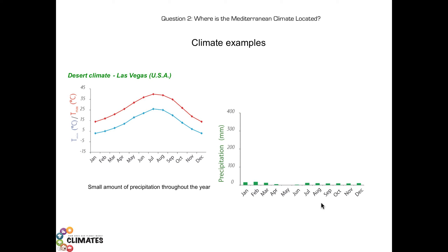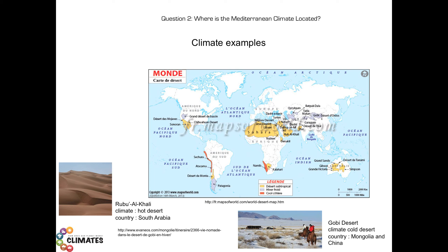We see that the amount of precipitation is very small throughout the year under a desert climate. But we can also notice that the average maximum temperature at Las Vegas in the US is 15 degrees Celsius or above year round. We are indeed under a hot desert climate. Hot and cold desert climates exist on the planet. In both cases, small quantities of precipitation are noticed all year round, but some have higher temperatures than others.